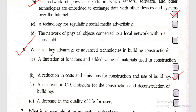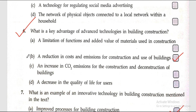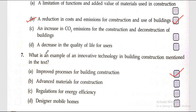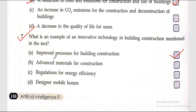Question six: what is a key advantage of advanced technology in building construction? The accurate answer is a reduction in cost and emissions for construction and use of buildings. Question seven: what is an example of an innovative technology in building construction mentioned in the text? The accurate answer is improved processes for building construction.